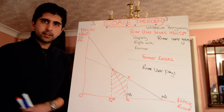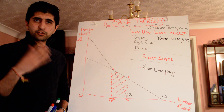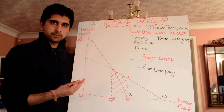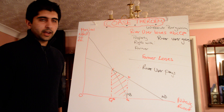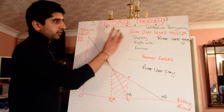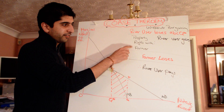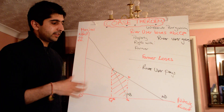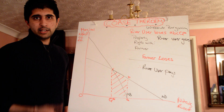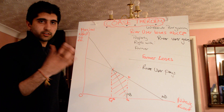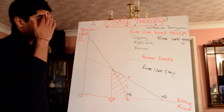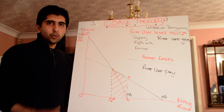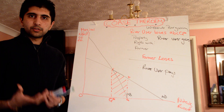Now let's assume property rights are actually allocated — with no transaction costs, well-defined, and enforceable. These are key assumptions we make. Assume property rights are given to the farmer, meaning he can do what he likes to the river. By allocating rights, a medium of bargaining is now allowed to happen.